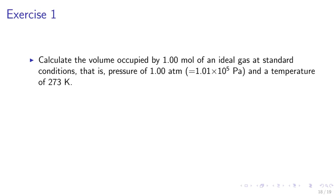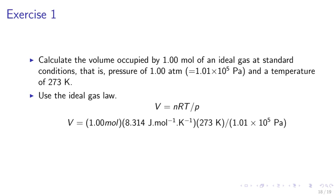Exercise 1. Calculate the volume occupied by 1 mol of an ideal gas at standard conditions, that is a pressure of 1.0 atm and a temperature of 273 Kelvin. We may use the ideal gas law to calculate the volume, v equals nRT over p. So v equals 1 mol times 8.314 joule per mol per kelvin times 273 Kelvin divided by 1.01 times 10 to the 5 pascals.